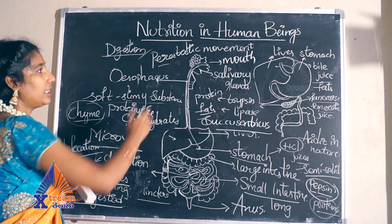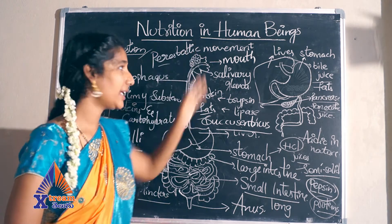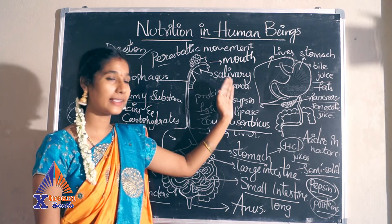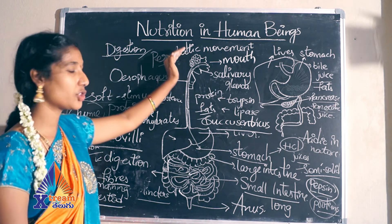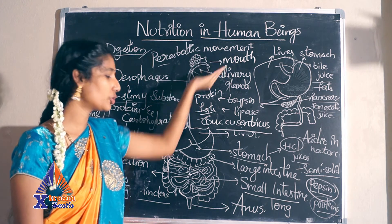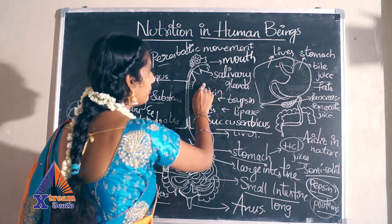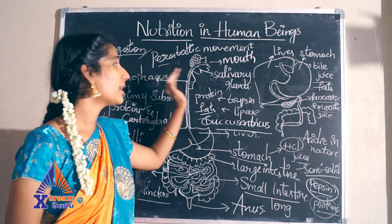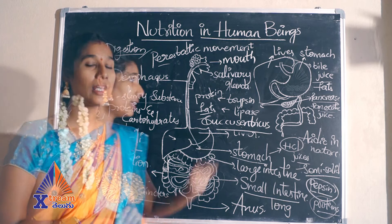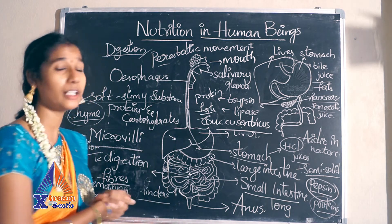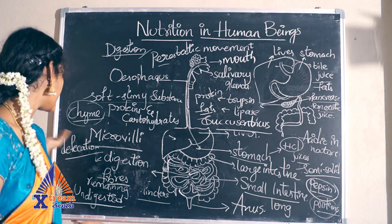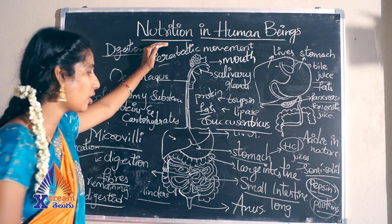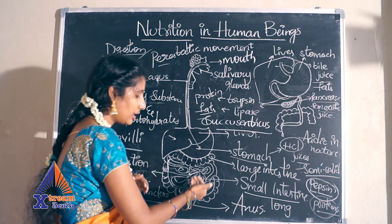This is the alimentary canal of the human digestive system. In nutrition in human beings, food enters from the mouth and is defecated from the anus, involving various steps, functions, enzymes, and juices. These juices and enzymes help the conversion of undigested food from the mouth all the way to the anus. Key processes include mastication, defecation, and emulsification.